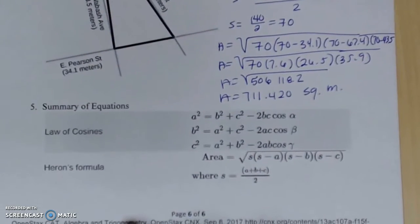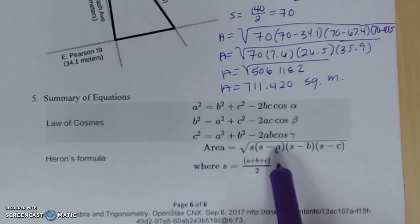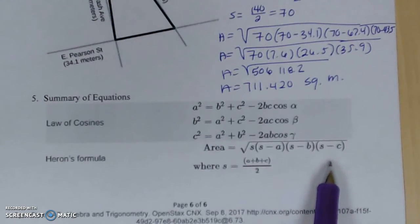To summarize our section, we have the law of cosines, which has other forms like we saw on page two, and Heron's formula. I hope this went well for you. Let me know if you have any questions and best of luck with 10.2.